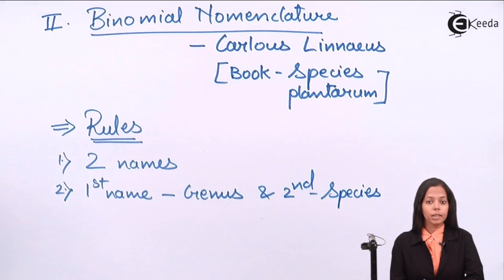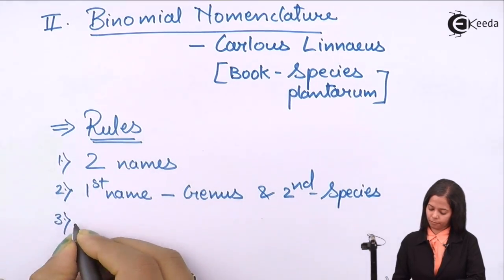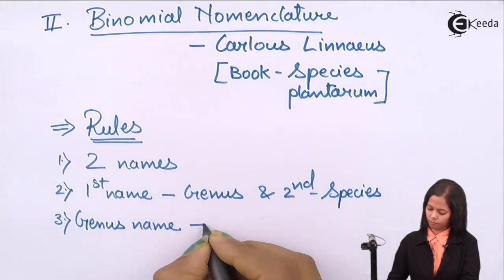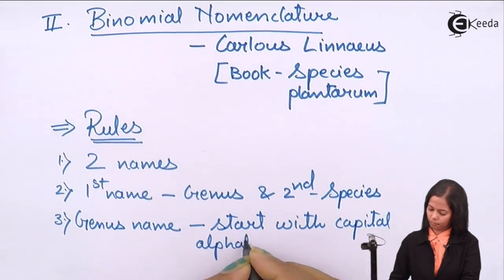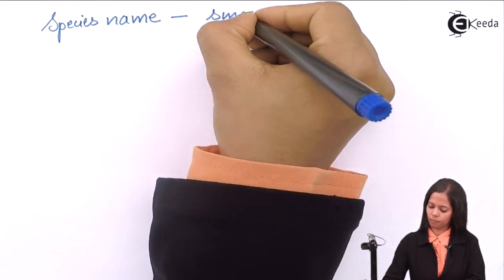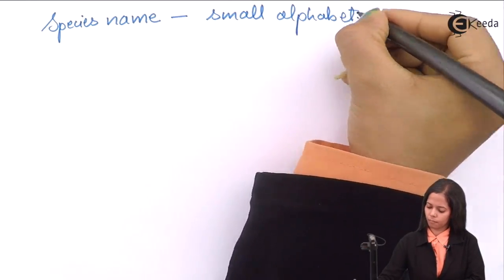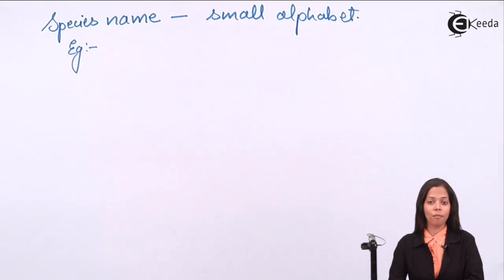Rule number three: the genus name should start with a capital letter and the species name should start with a small letter. For example, Mangifera indica — this is the scientific name, or binomial name, of mango.